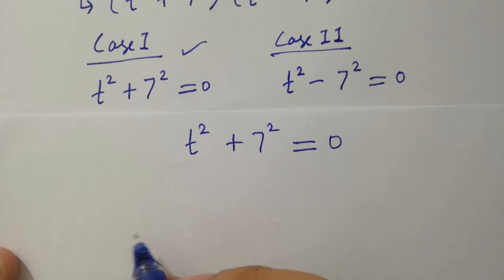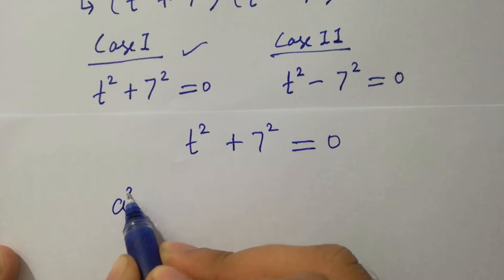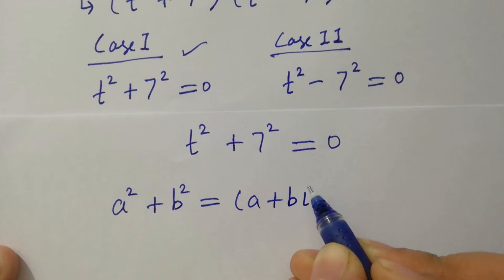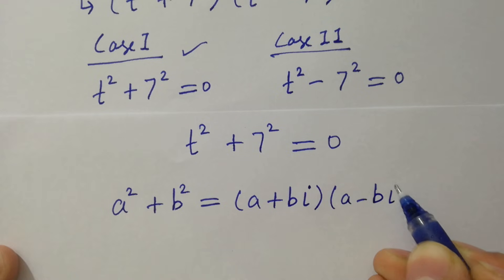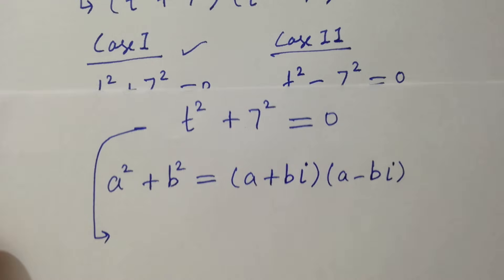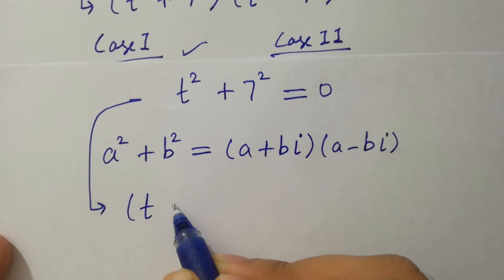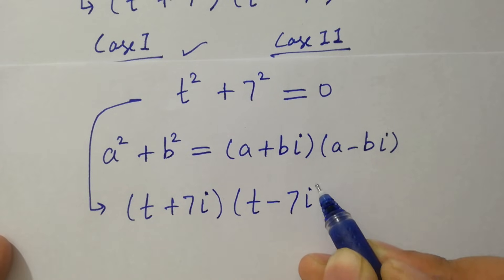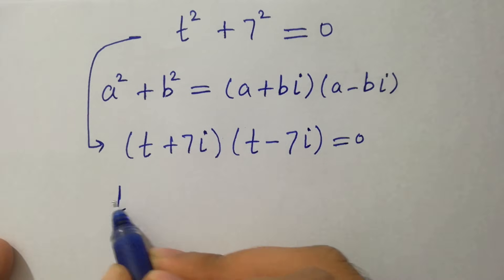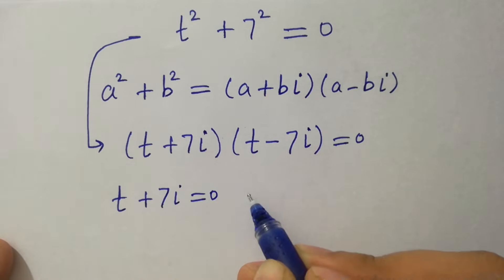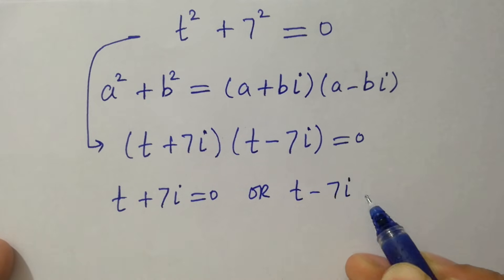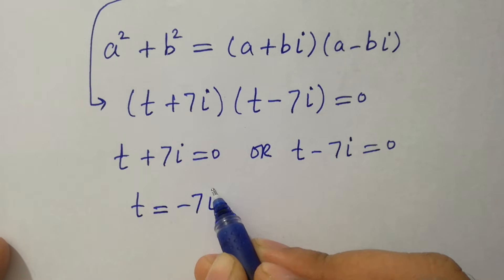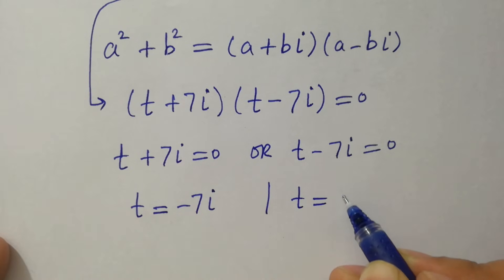For Case 1, using the formula a² + b² equals (a + bi)(a − bi), we write (t + 7i)(t − 7i) equals 0. Either t + 7i equals 0 or t − 7i equals 0, giving us t equals −7i or t equals +7i.